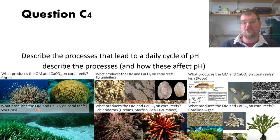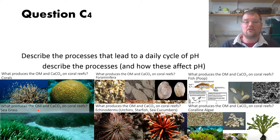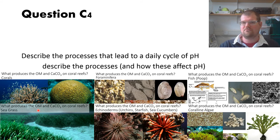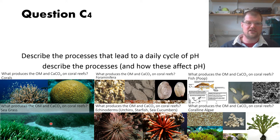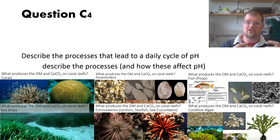It would also have been worth mentioning the organisms actually doing these processes. Some organisms, like corals, photosynthesize, respire, and produce calcium carbonate. Others are just photosynthesizing, like seagrasses. Some are just carbonate producers, like urchins and fish. Giving examples of organisms important in reef environments for these processes would have earned extra credit.